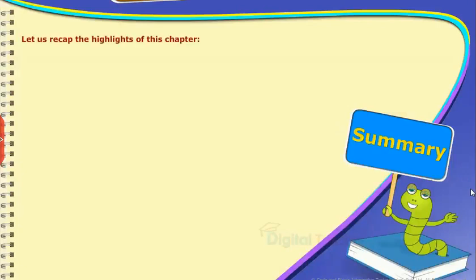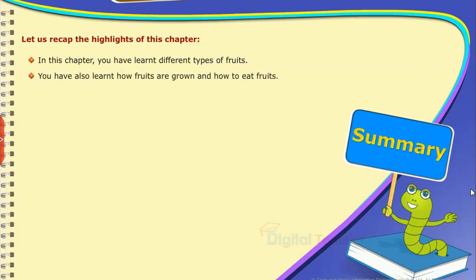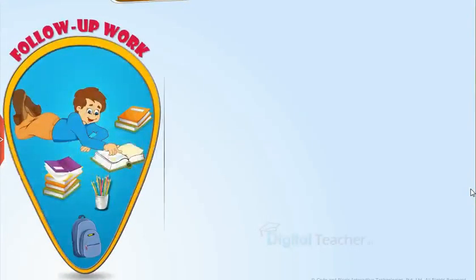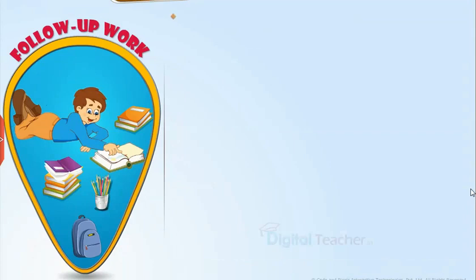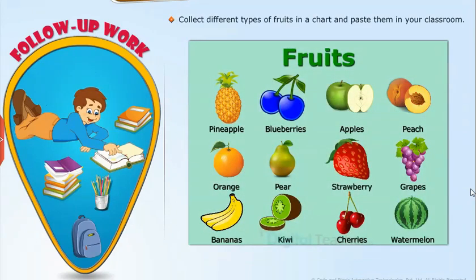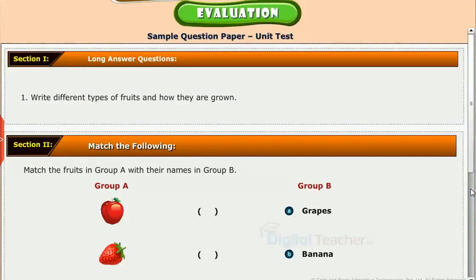Summary: Let us recap the highlights of this chapter. In this chapter, you have learned different types of fruits, how fruits are grown, and how to eat fruits. Let's take up the following activity: draw different types of fruits and color them, and collect different types of fruits in a chart and paste them in your classroom. Test your understanding of the lesson by taking the mock unit test.